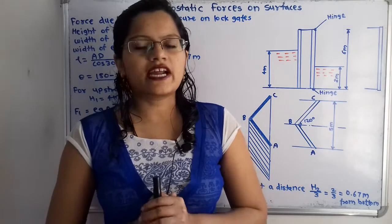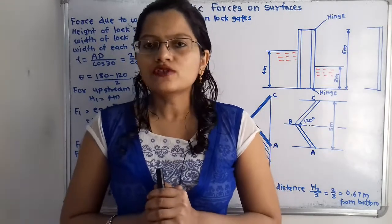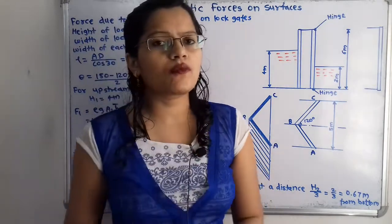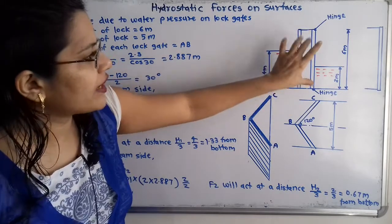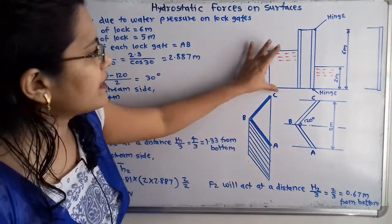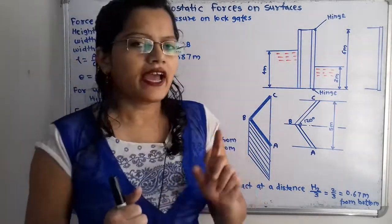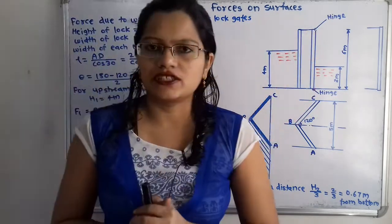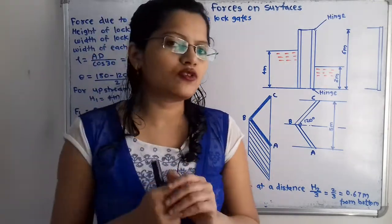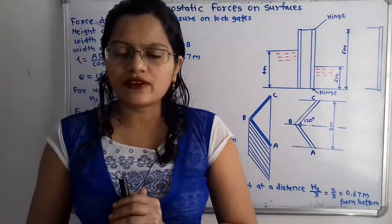We will first understand the diagram as per the given data. The height of this lock gate is given as 6 meters. We will draw here the front view for this lock gate. When we observe this lock gate from the front we can observe it in the form of an edge. On the upstream side the level of water is 4 meters height and on the downstream side there is the level of water up to 2 meters height. At the top and bottom there is the hinge. When we observe this lock gate from the top, the angle between the two lock gates is 120 degrees.